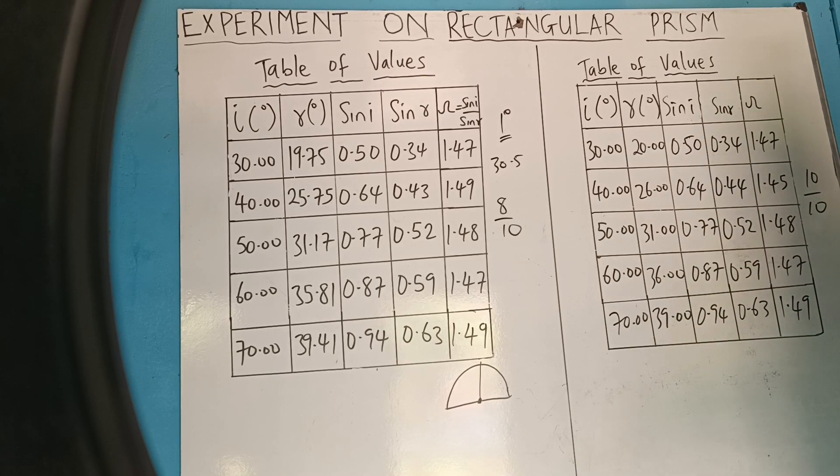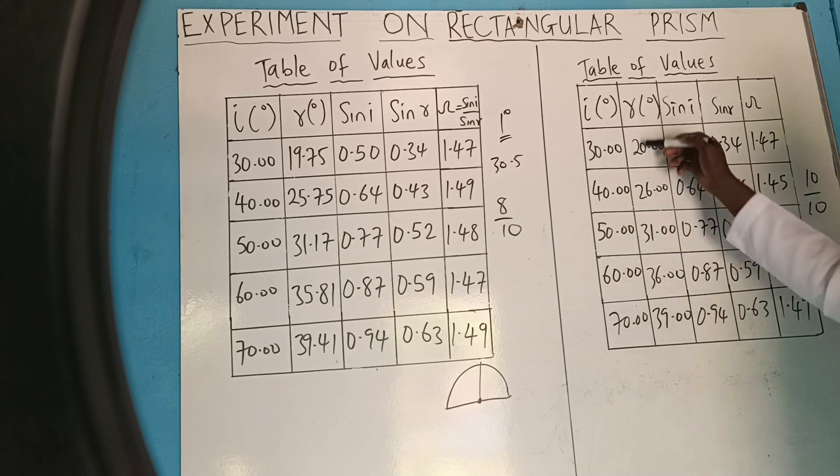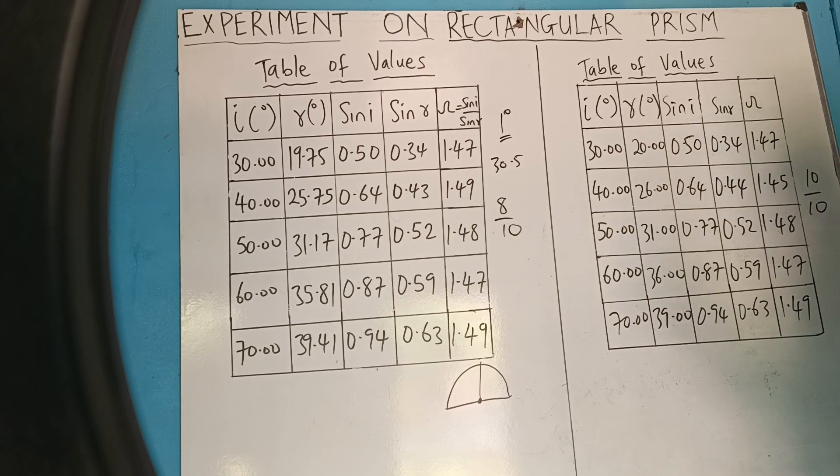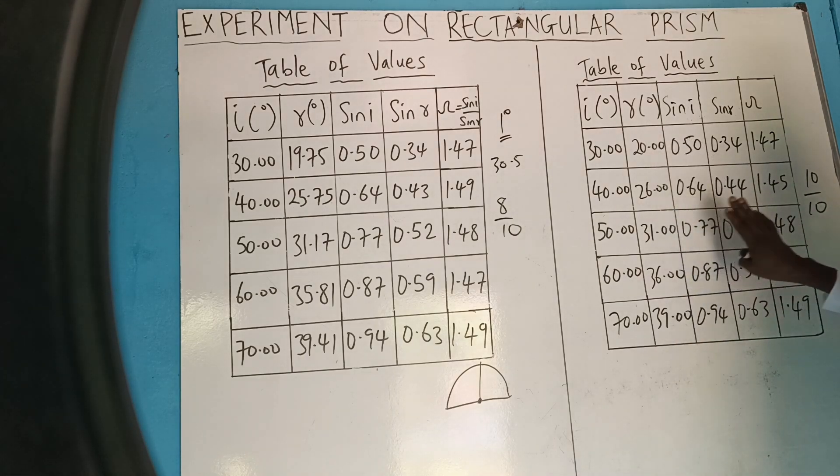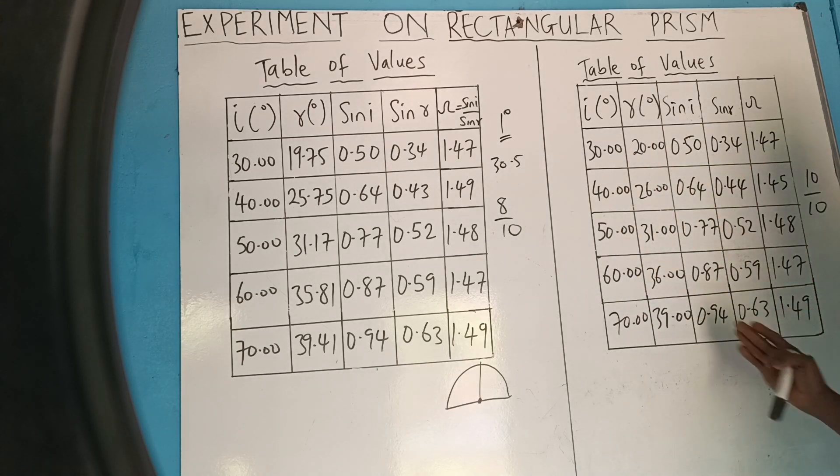So, this is the table that genius students submit. Those that are clever, they submit this because we call them genius because they took recognizance of the least measurement a particular instrument can get. And in this case, protractor, the least measurement protractor can get. They took note of it while making that. There is no way you can say somebody manipulated here. Yes, because everything goes well here. Are you getting it?